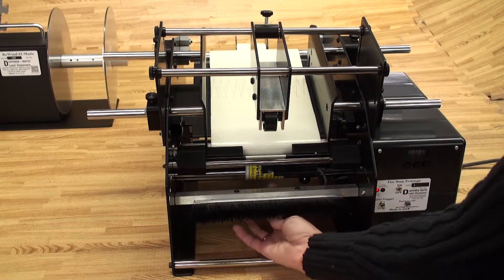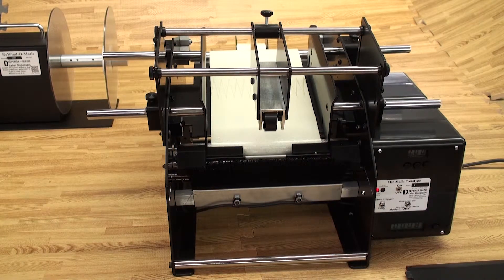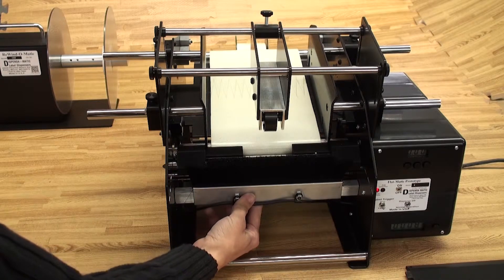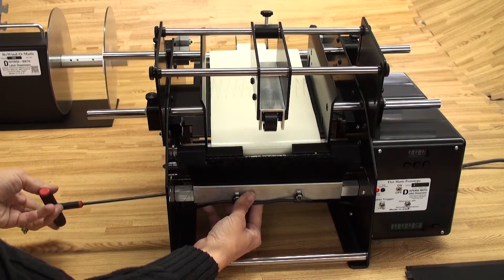Now we are going to flip the brush back up. You can adjust the height according to your product. For example, if you have a recessed label surface, you can adjust the brush higher to help push the label up and smooth it onto that recessed area.